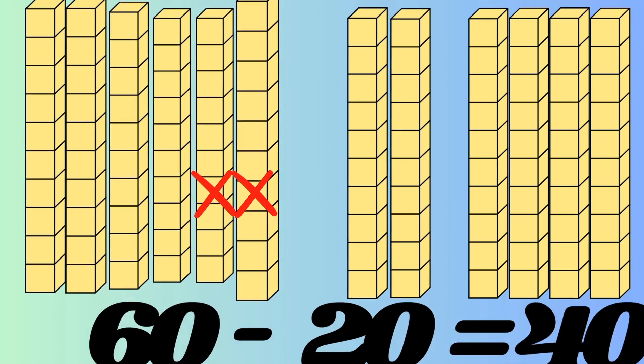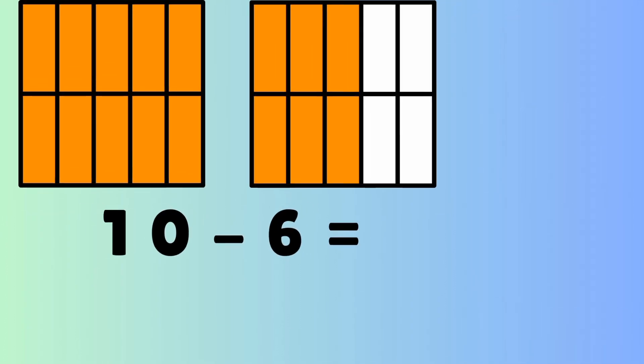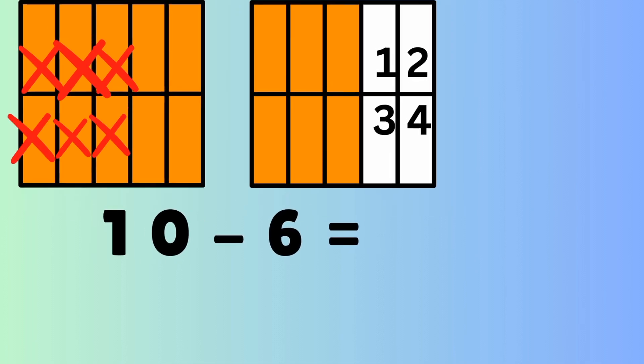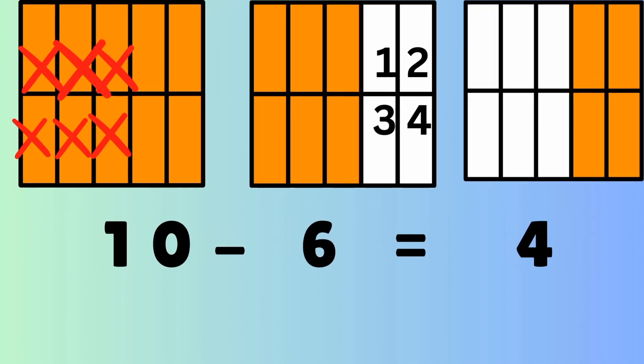Now we're going to work with some different examples. You got a ten block on the left. There's ten individual orange squares minus six orange squares. So if you mark off six, how many does that leave? If you count them up, it leaves four. So ten minus six is four.